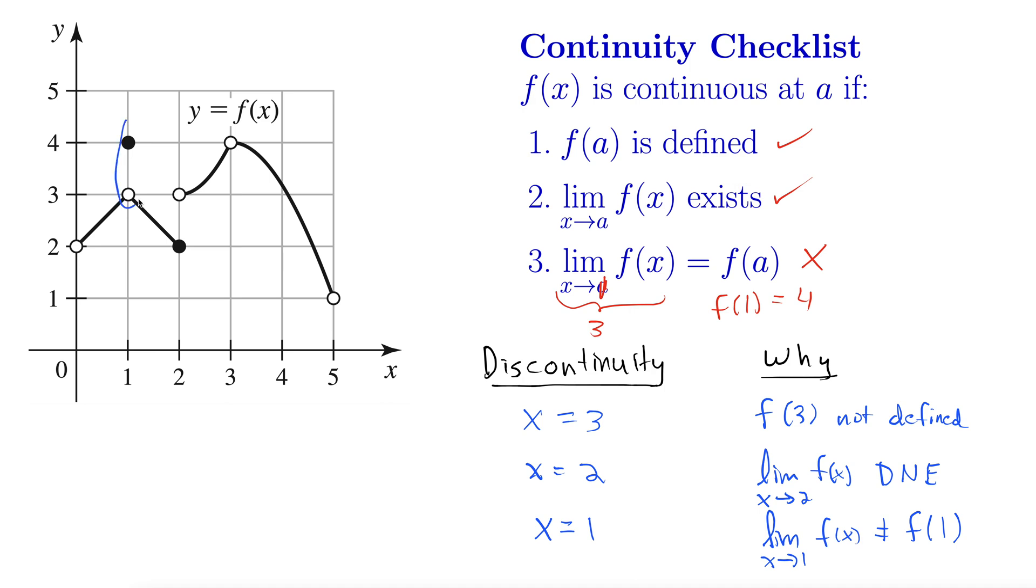And just a little bit more notation here. We call these two discontinuities removable discontinuities. Removable. And what that means is if we can replace a single point and fix the discontinuity, it's a removable discontinuity. So note that both of these could be fixed very easily by just changing a single point.